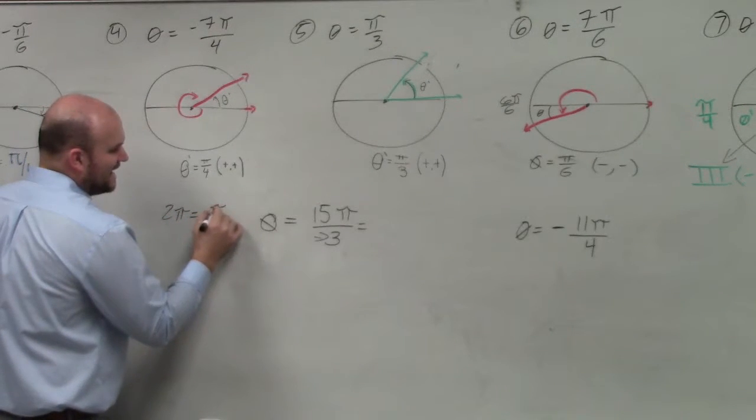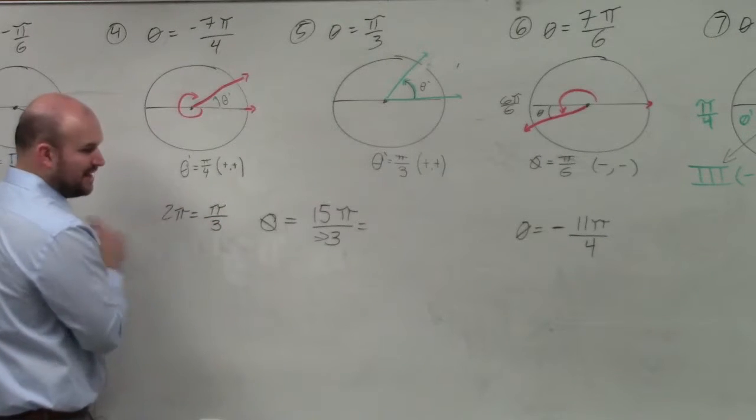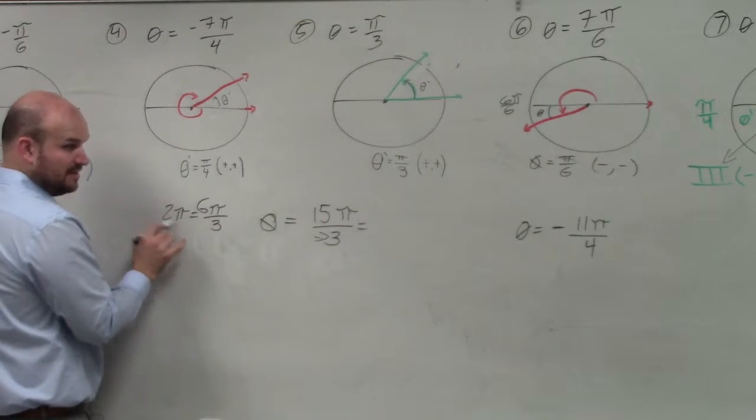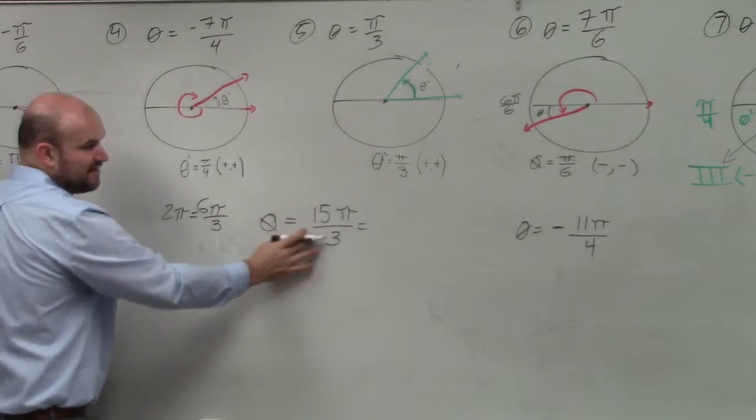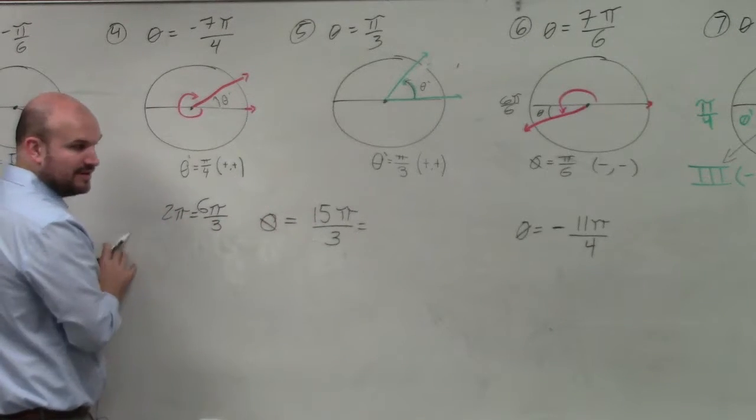How many pi's over 3 is equal to 2 pi? 6, right? Because 6 divided by 3 is 2. So therefore, I need to break this fraction up into 6 pi over 3's.